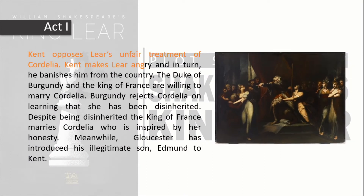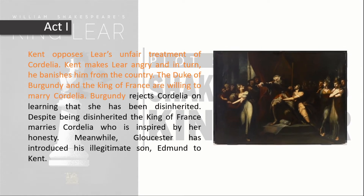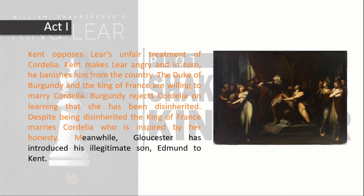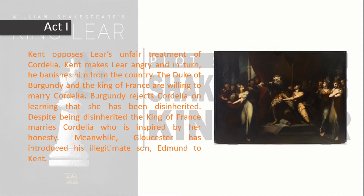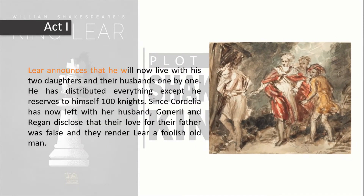Kent opposes Lear's unfair treatment of Cordelia. Kent makes Lear angry and in turn, he banishes Kent from the country. The Duke of Burgundy and the King of France are willing to marry Cordelia. Burgundy rejects Cordelia on learning she has been disinherited. Despite this, the King of France marries Cordelia, inspired by her honesty. Meanwhile, Gloucester has introduced his illegitimate son Edmund to Kent.